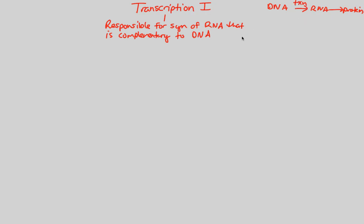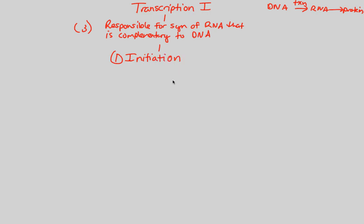Let's look at the first part of transcription known as initiation. There are three steps to transcription total. We'll do the first step — initiation — in this flowchart, and the other two in the second transcription flowchart. Initiation is a very easy name to remember, as it simply starts the process.